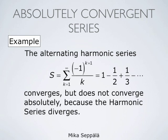The alternating harmonic series — summation k from 1 to infinity of negative 1 to the power k+1 divided by k, that is the sum 1 minus 1/2 plus 1/3 minus 1/4 and so on — converges by the alternating series test. But this series does not converge absolutely, because the harmonic series diverges, and the harmonic series is the one formed by the absolute values of the terms of this alternating harmonic series.